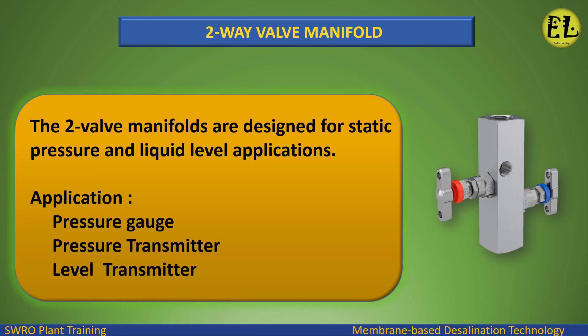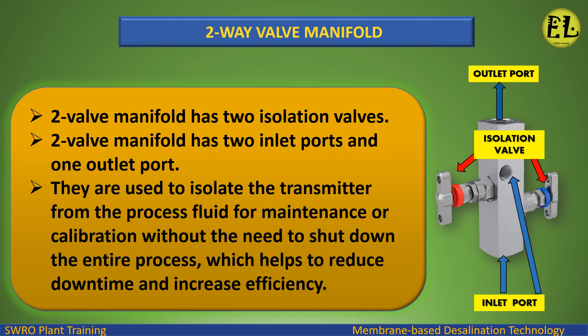Two-way valve manifold: the two-valve manifolds are designed for static pressure and liquid level applications. Applications include pressure gauge, pressure transmitter, and level transmitter. A two-valve manifold has two isolation valves, two inlet ports, and one outlet port. They are used to isolate the transmitter from the process fluid for maintenance or calibration without the need to shut down the entire process, which helps to reduce downtime and increase efficiency.